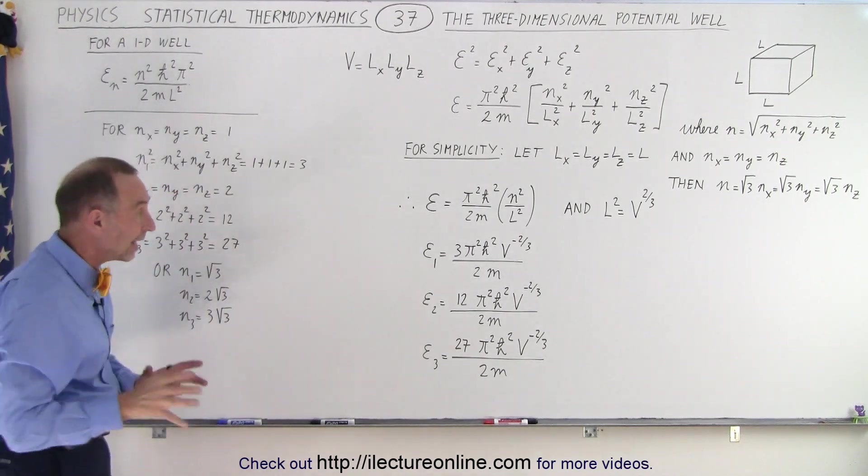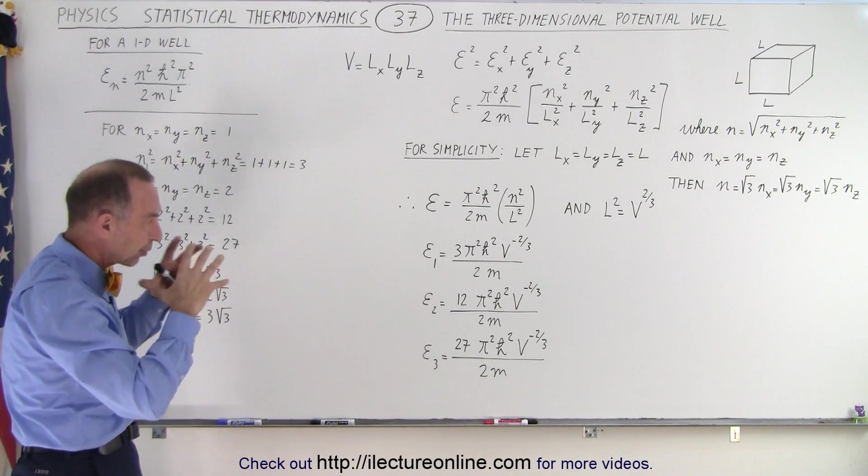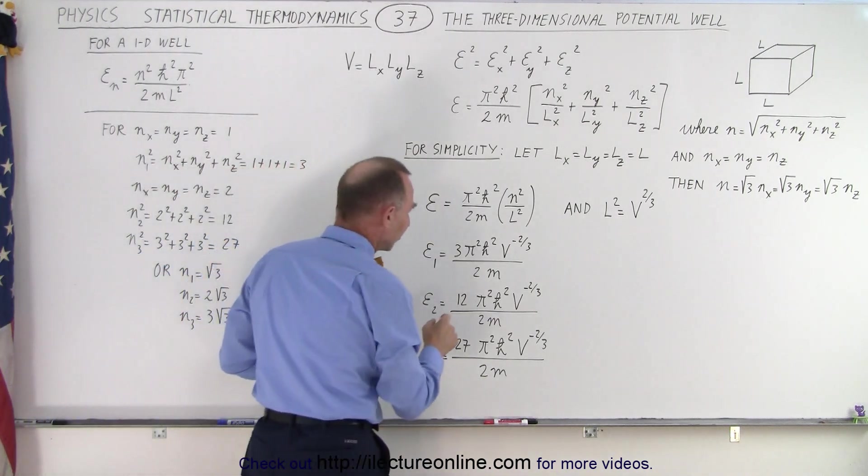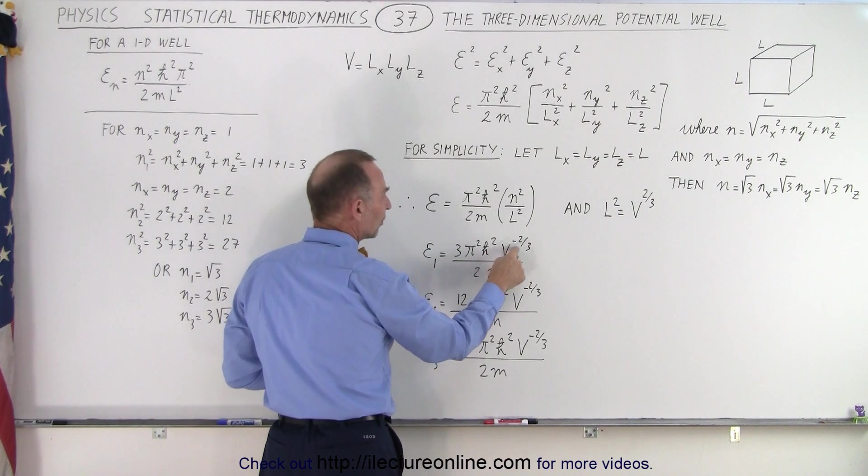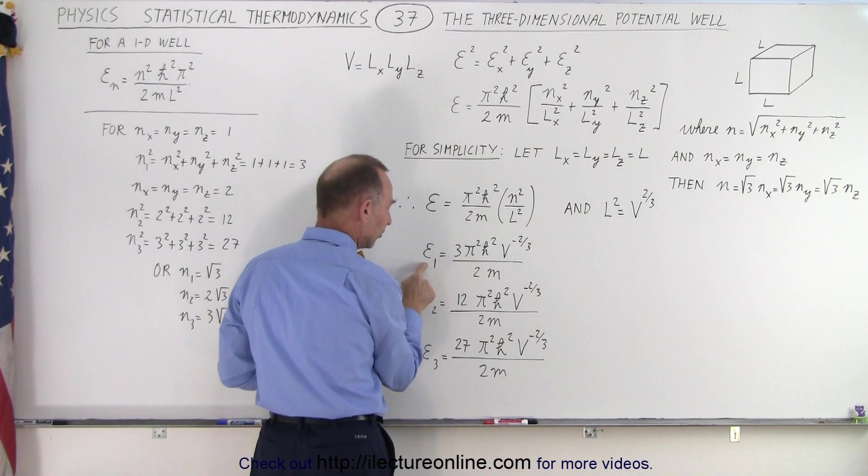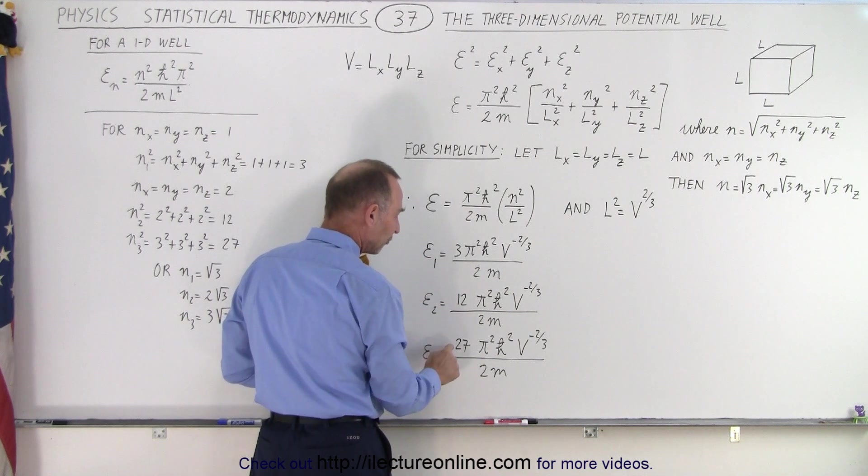But now we finally have the ability to describe the energy of a particle in a three-dimensional well by simply writing it as three pi squared h-bar squared v to the minus two-thirds over two m for n sub one. For e sub two, we have twelve, and for e sub three, we have twenty-seven.